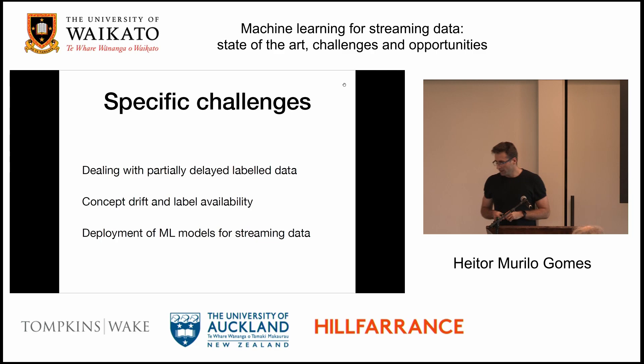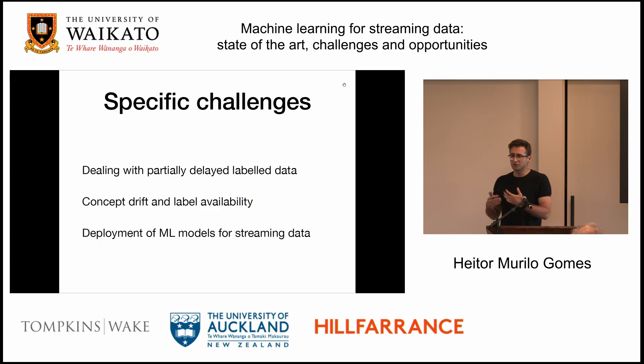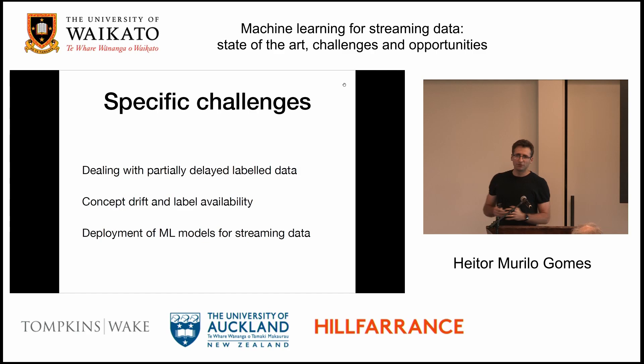Specifically, I'm going to talk about delayed and partially labeled data. In streaming, we usually assume immediate labeling, which means after I make a prediction and before I make the next prediction for the next instance, I already get the feedback for that instance so I can immediately update my model. That's very nice — people produce a lot of papers with that, and I did some as well. Sometimes it doesn't happen in reality; reality is always getting in the way of our research.